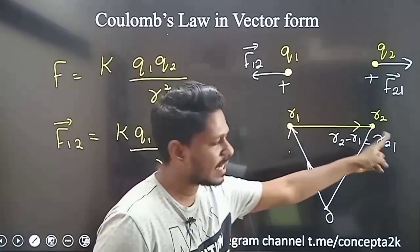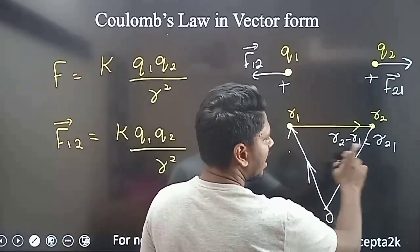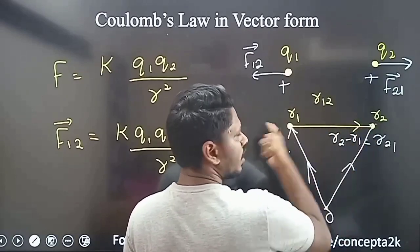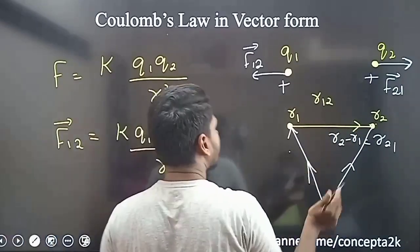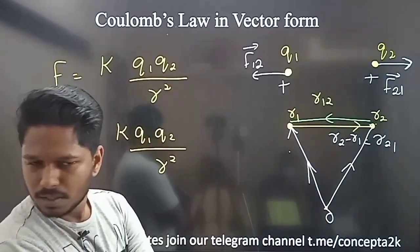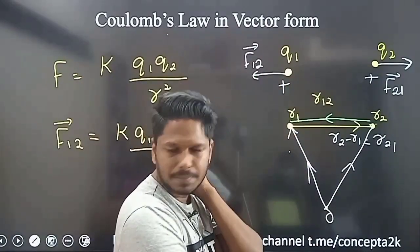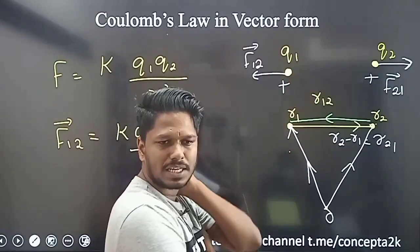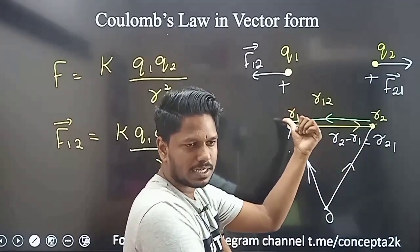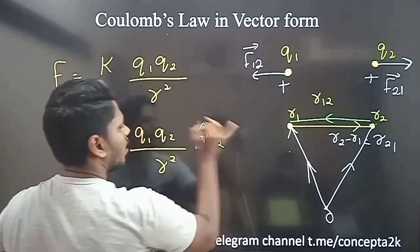What is the direction of R12 and R21? R21 is equal to minus R12. In the force F12, the direction is along the direction of R12. So in F12, we use the unit vector R12-cap.